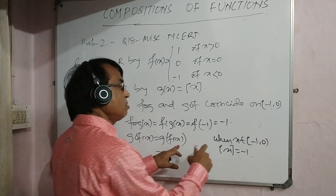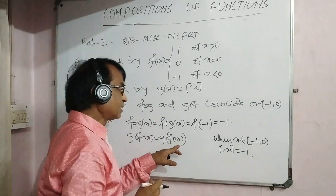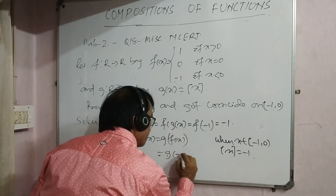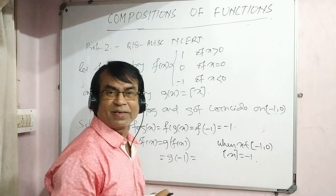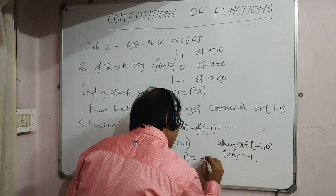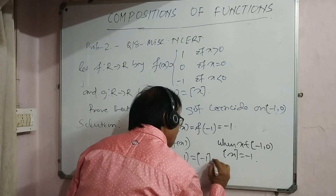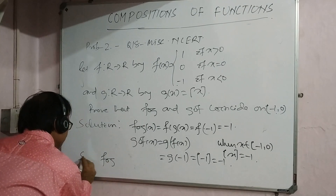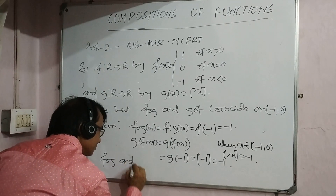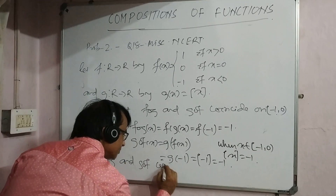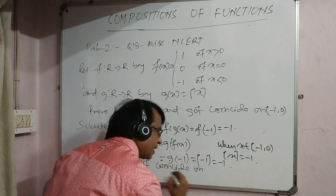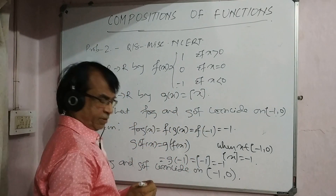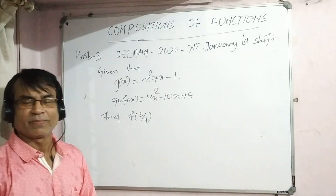When x belongs to [−1, 0), we have x < 0, so f(x) = −1 according to the signum function rule. Then g(−1) is the greatest integer of −1, which equals −1. So we observe that fog and gof coincide on this interval.